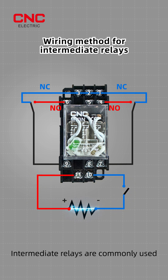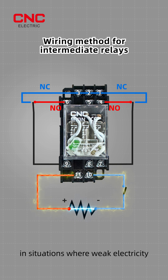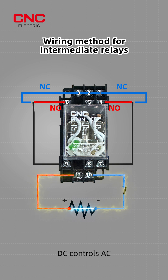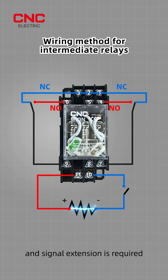Intermediate relays are commonly used in situations where weak electricity controls strong electricity, DC controls AC, and signal extension is required.